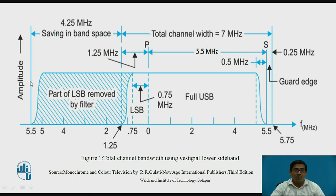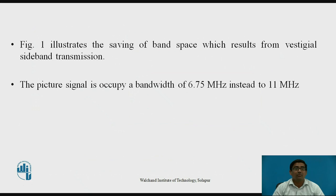This graph is drawn as amplitude versus frequency. The total channel bandwidth is 7 MHz. The picture carrier is at 5.5 MHz, the sound carrier is at 0.5 MHz, and the guard band is 0.25 MHz. In this way, the total channel bandwidth requirement is 7 MHz, and we save 4.25 MHz in band space. Figure 1 illustrates the saving of band space resulting from vestigial sideband transmission. The picture signal occupies a bandwidth of 6.75 MHz instead of 11 MHz.